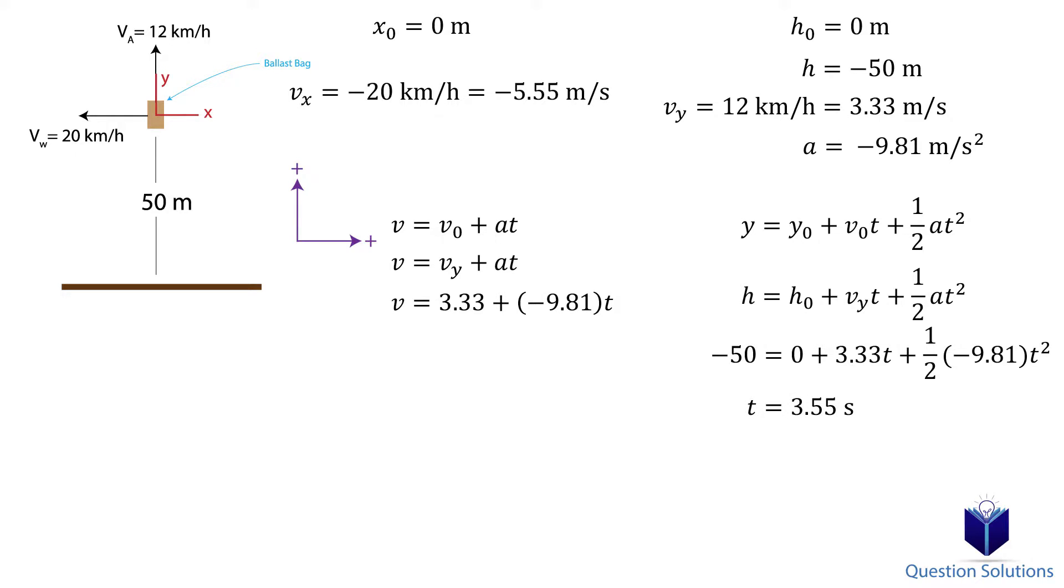We can now substitute this value back into our previous equation to figure out the velocity. When we substitute, we get velocity is equal to negative 31.5 meters per second. The negative sign simply means the velocity is downwards, since we chose up to be positive.